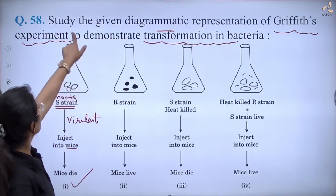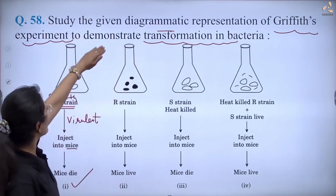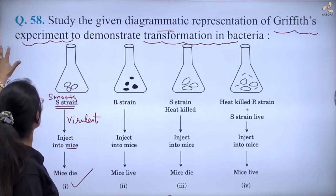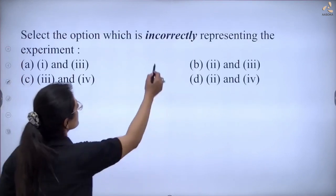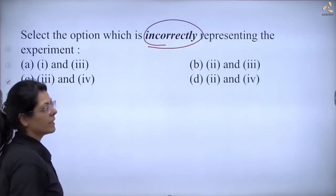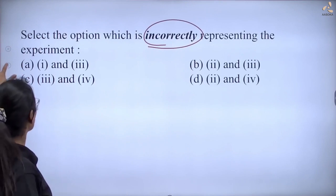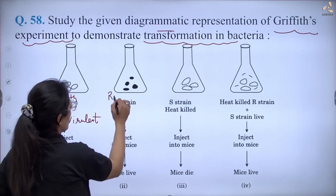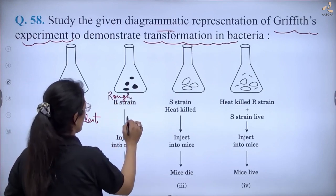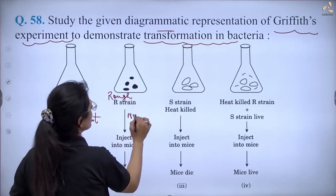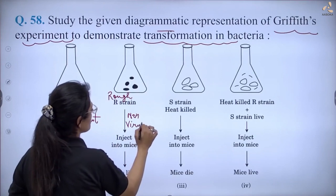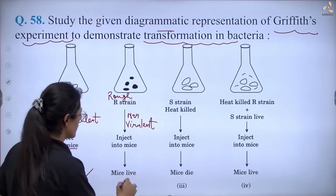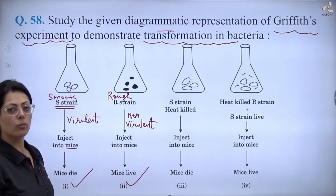We have to find the incorrect option. Select the option which is incorrectly representing the experiment. So the first one is correct. In the second option, look at the R strain — meaning the rough strain. It is a non-virulent strain. Again, if it goes into the mice, the mice lives. That is absolutely correct. So options one and two are both correct.